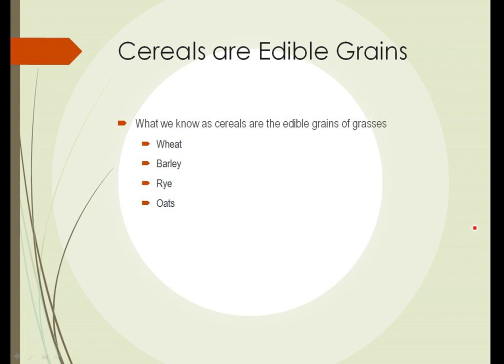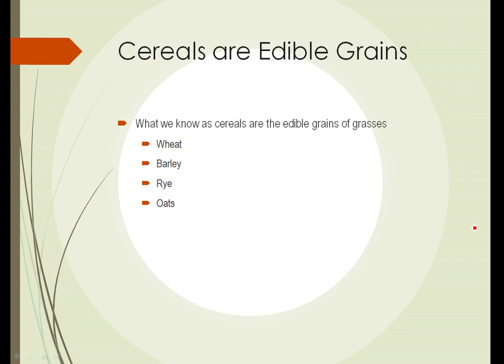Wheat, barley, rye, and oats are all included in that group. Technically, the seeds of all grasses are edible. It just so happens that these are among the largest seeds and also the most palatable seeds to humans.